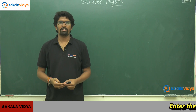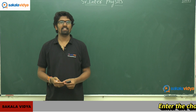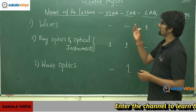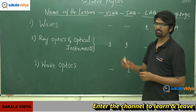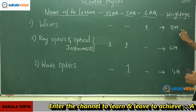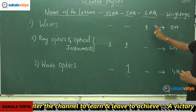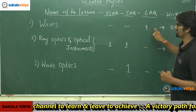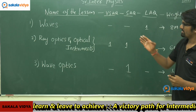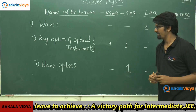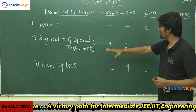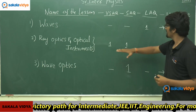Let us have a discussion on the blueprint of our Senior Intermediate Physics, that is second year physics. The first chapter is Waves, which has a weightage of 8 marks, and we are going to get directly one long answer type question from Waves. The second chapter is Ray Optics and Optical Instruments, from which we are going to expect one very short answer type question and one short answer type question.